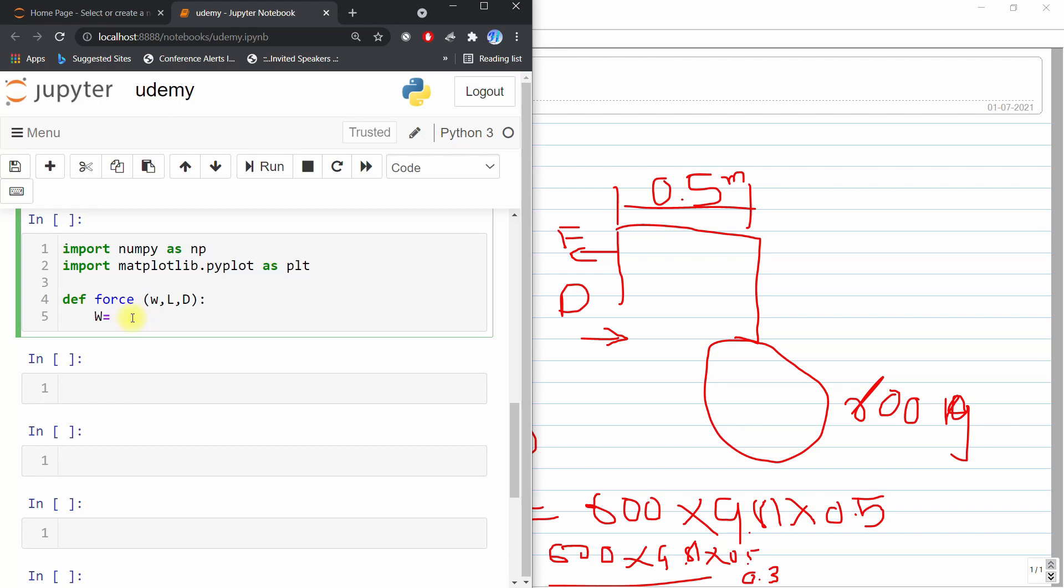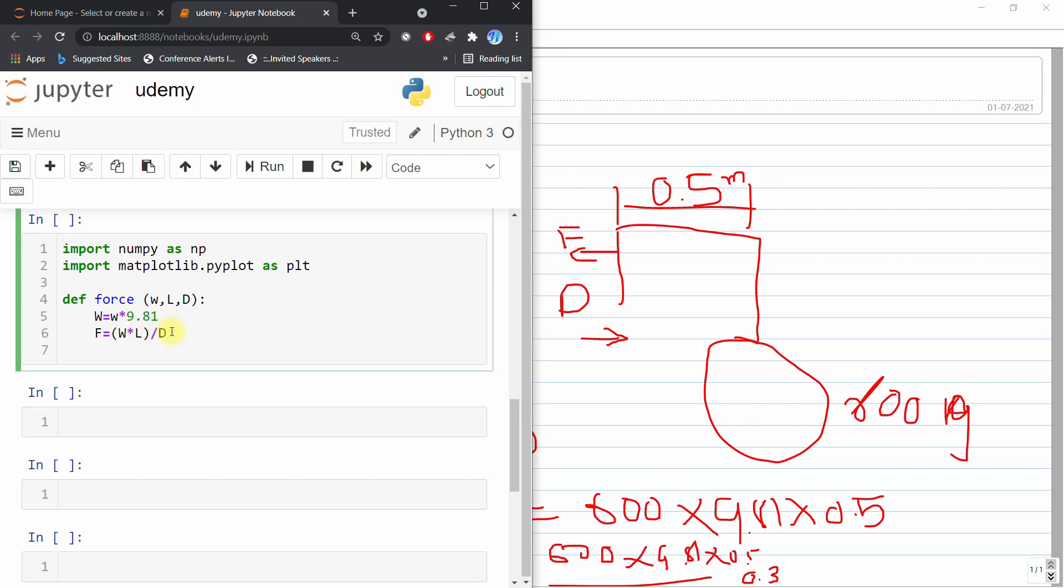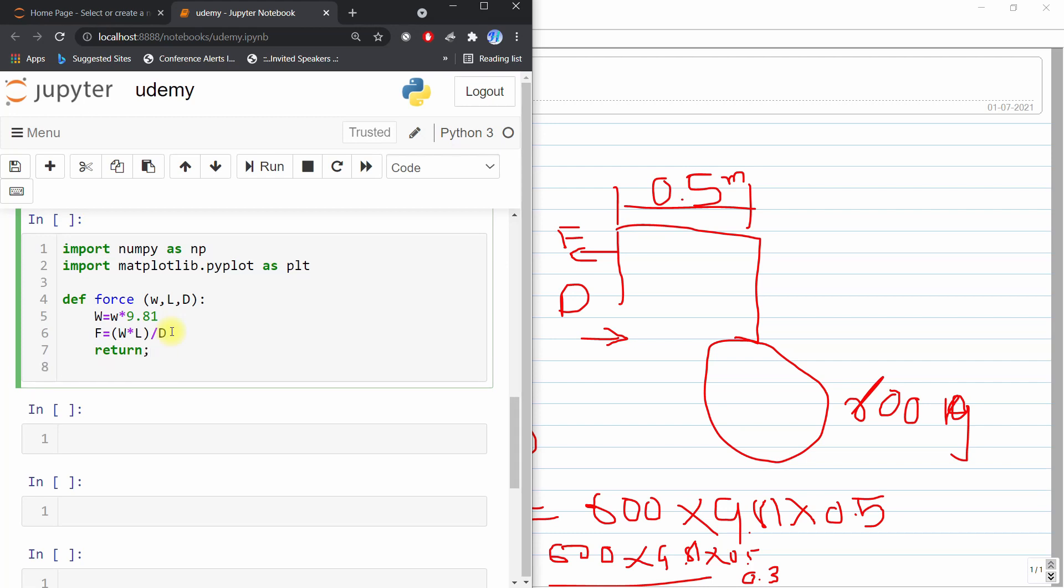And capital W is equal to small w multiplied by 9.81 and F is equal to capital W multiplied by this L and divide by d. So I will create bracket and I will return this code.